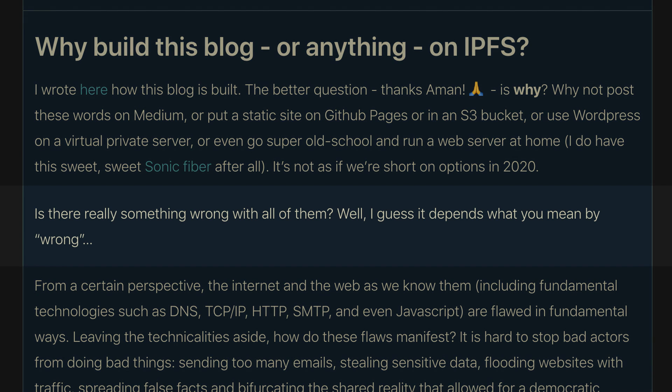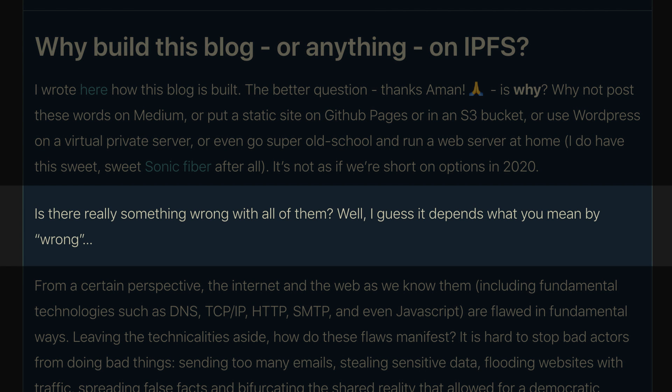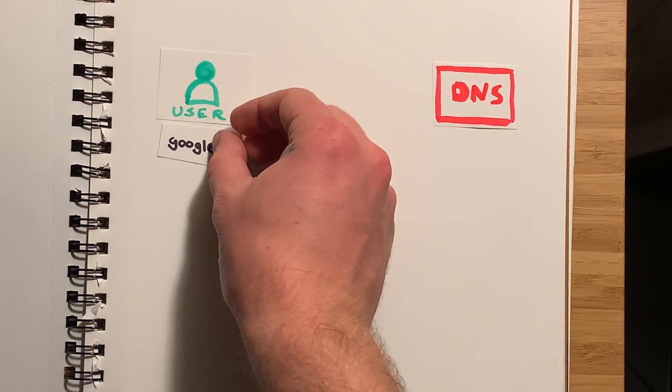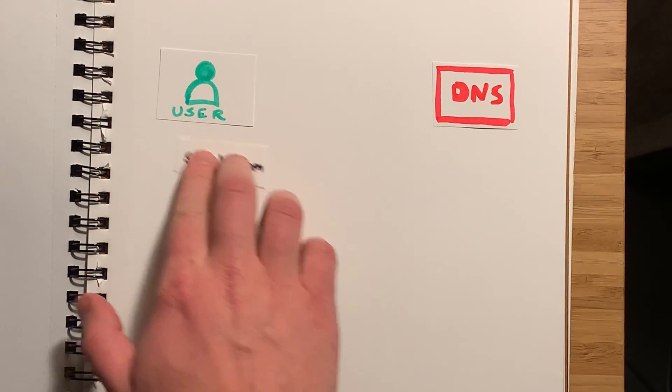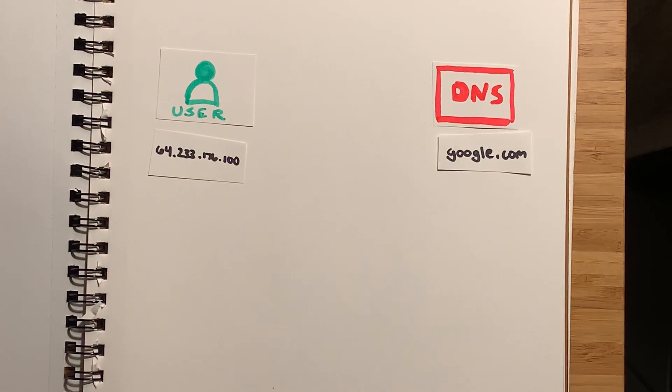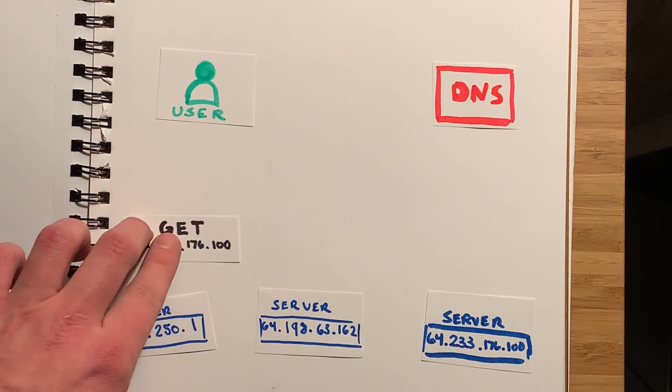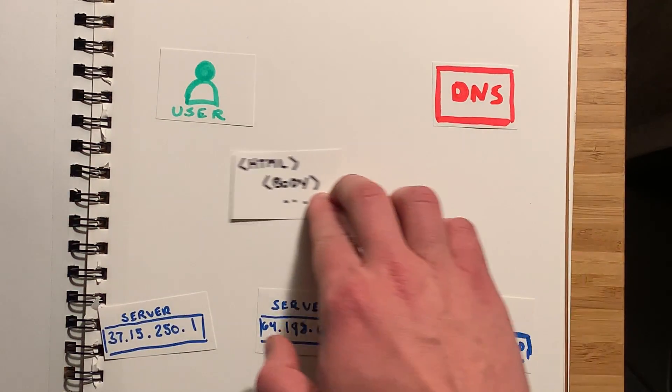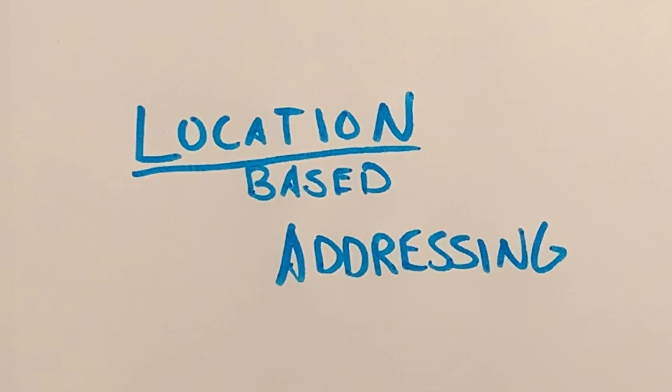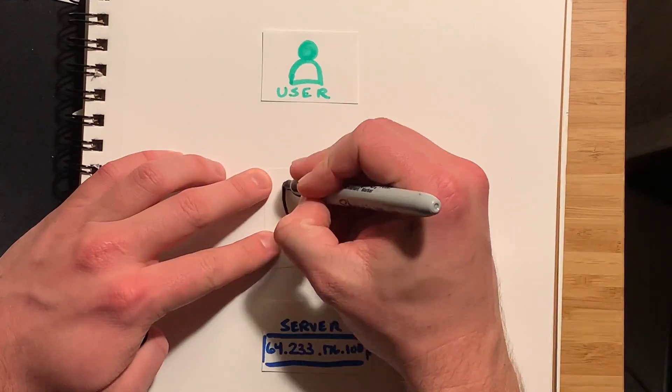That initial blog post talked about problems with the current internet. The internet today is built on technologies like HTTP and DNS — it works by looking up IP addresses and forwarding content from them. So when I type google.com in my browser, it performs a DNS lookup, finds the IP address for google.com, forwards traffic there, and returns whatever is at that server to be displayed in the browser. This is called location-based addressing.